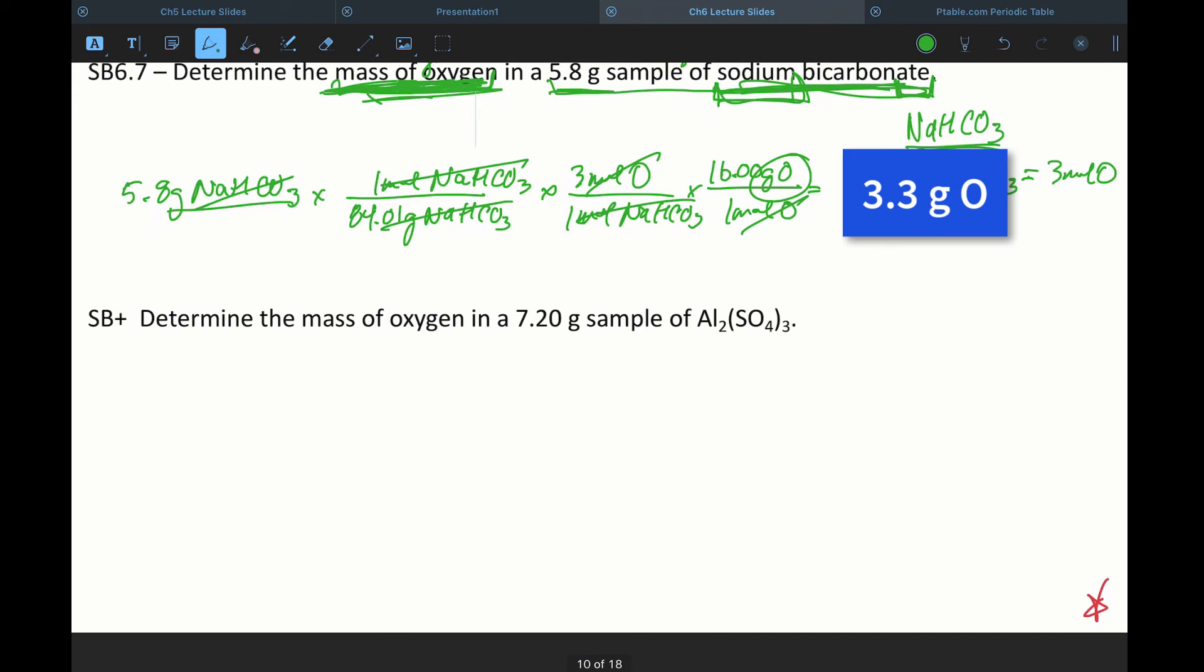So same thing. Determining the mass of oxygen, here's our goal, in a 7.20 gram sample of that. So same principle. Let's go ahead and write our relationships. So oxygen to aluminum sulfate, there are three sulfates, and there are four oxygens per sulfate, which means there are 12 moles of oxygen equal to every one mole of Al2(SO4)3.